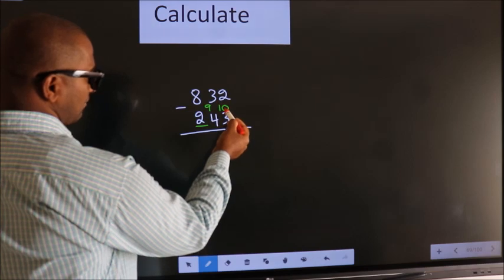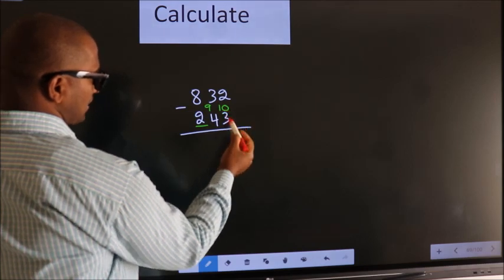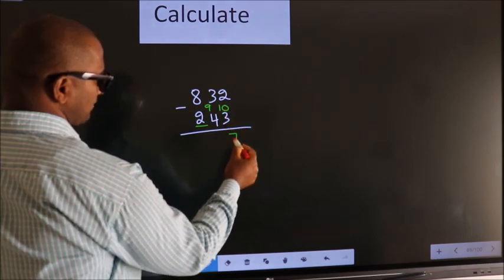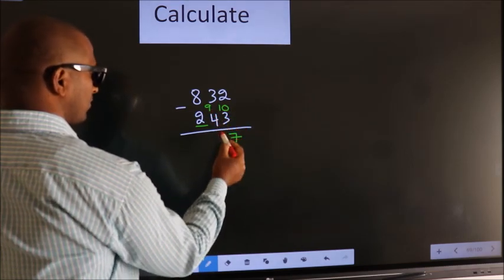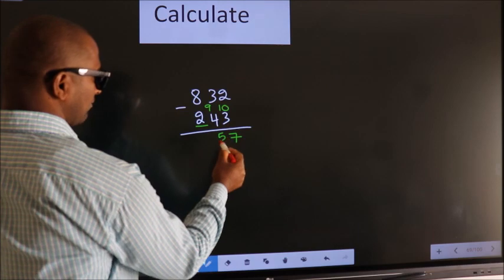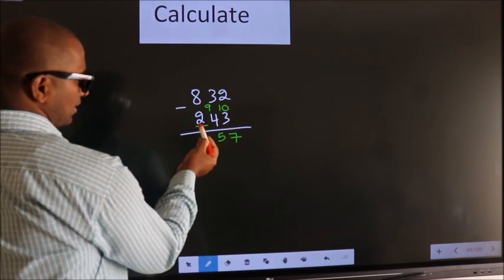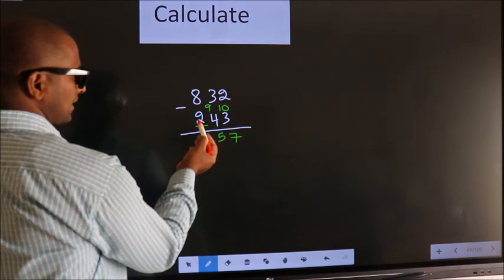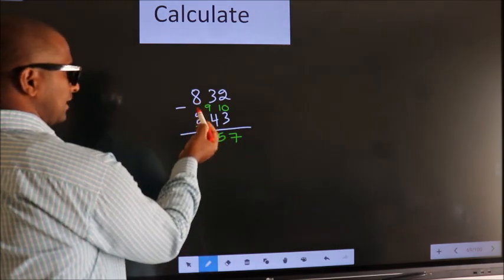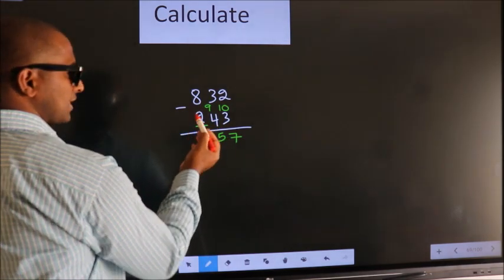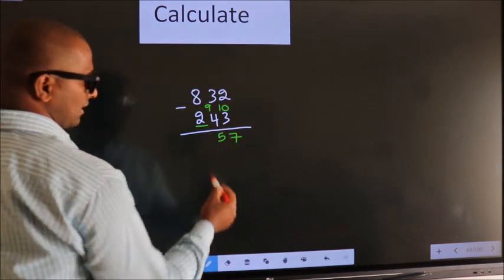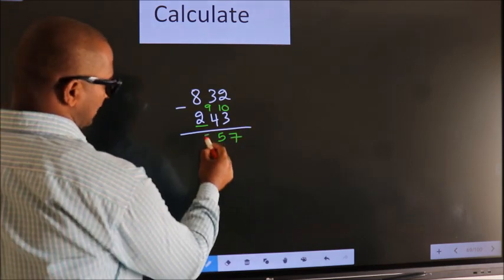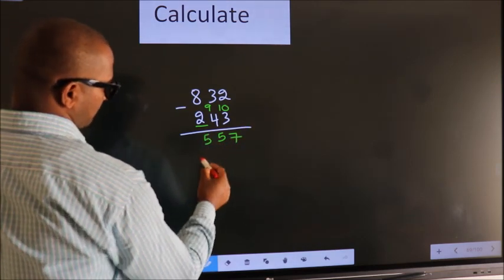Now 10 minus 3 is 7. 9 minus 4 is 5. For the first digit, you do 8 minus 2 equals 6, then decrease by 1 more, we get 5.